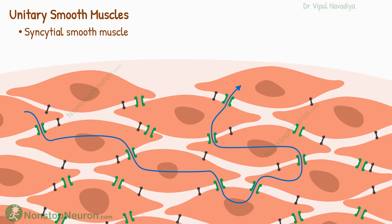Such muscles are widely seen in the walls of viscera — for example, the gastrointestinal tract, bile ducts, uterus, etc.